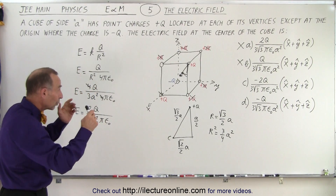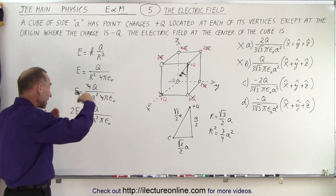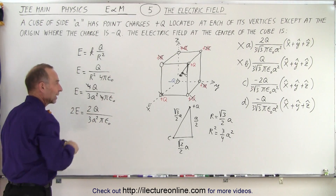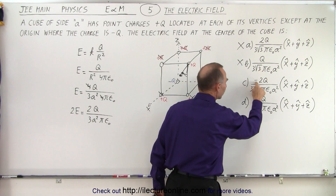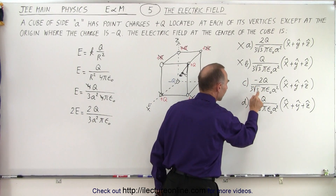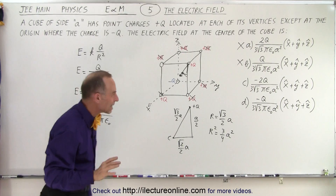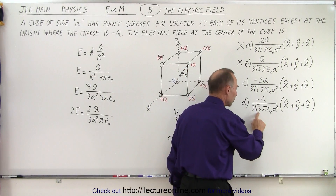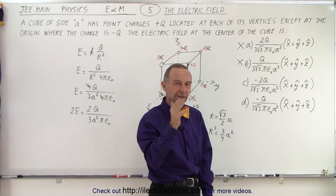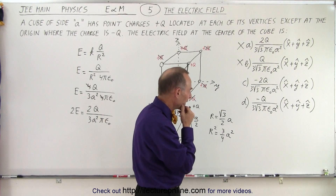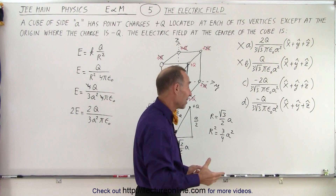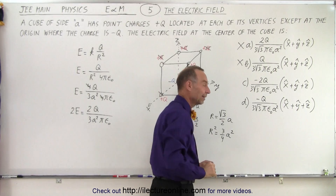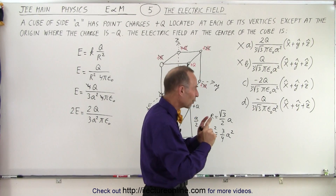Realizing that it's going to act in a negative direction, the magnitude is 2Q over 3A²π epsilon-naught but acting in a negative direction, so the answer appears to be minus 2Q — answer C. But there's something wrong with the denominator: I have a 3 here and a square root of 3 in the answer. If you're taking the test and running out of time, you might just circle C and move on, but we're missing something.